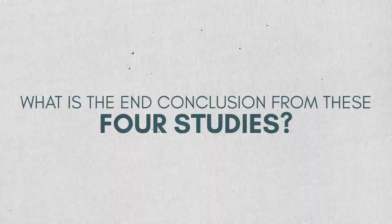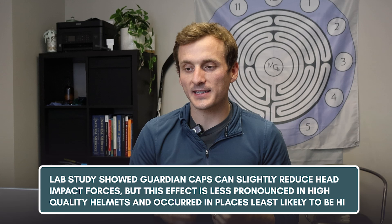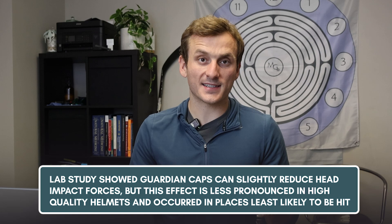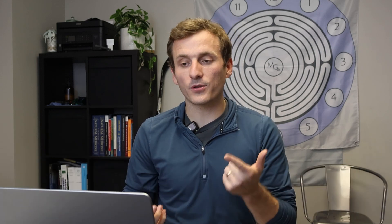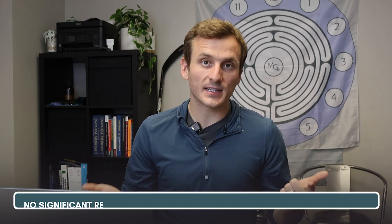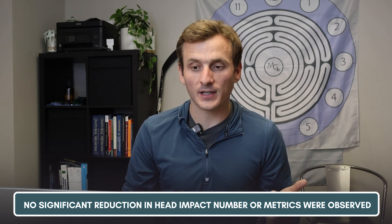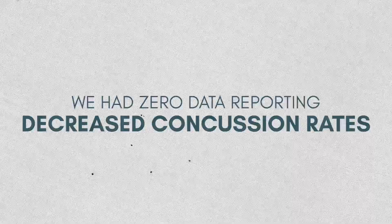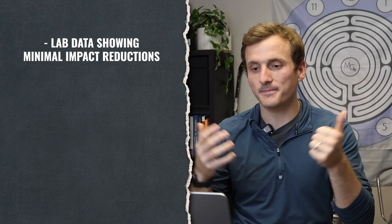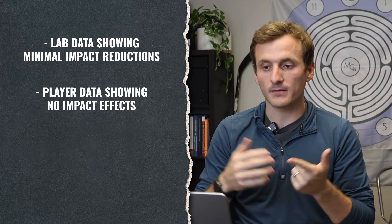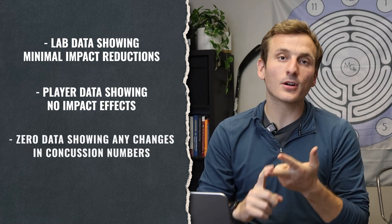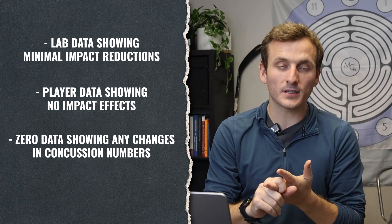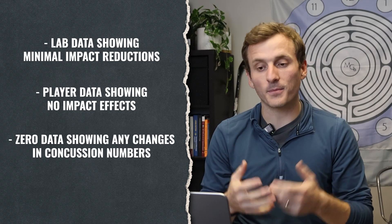So, what is the end conclusion from these four studies? One, lab studies show guardian caps can slightly reduce head impact forces, but this effect is less pronounced in high quality helmets and occurred in places least likely to be hit. And when we go to the real world football settings, no significant reduction in head impact number or metrics were observed. And very, very important, we have zero data reporting decreased concussion rates. We have lab data showing minimal impact reductions. We have player data showing no impact effects. And we have zero data showing any changes in concussion numbers. And that is arguably the most important and most missing metric from this research right now.